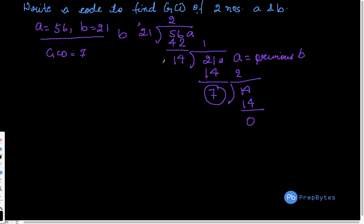And what happened to B? This B is nothing but A mod B. So we divided A with B and whatever was the remainder became the new B. So my latest B became A mod B.